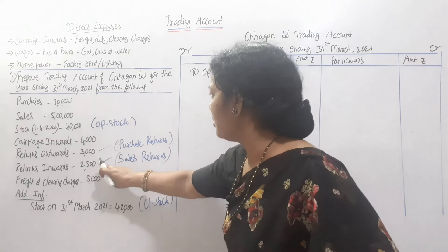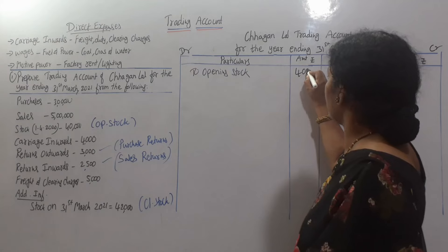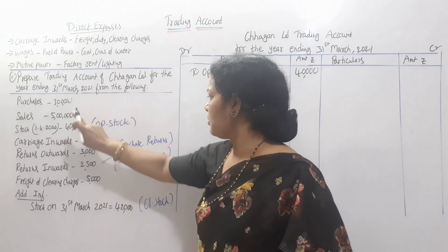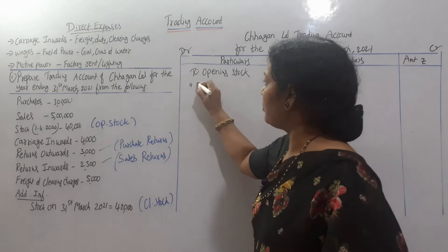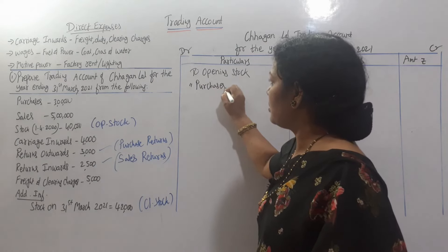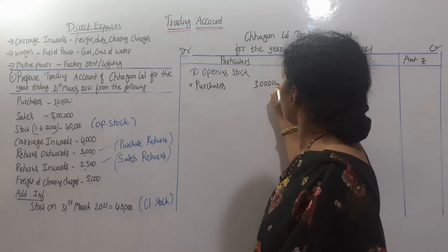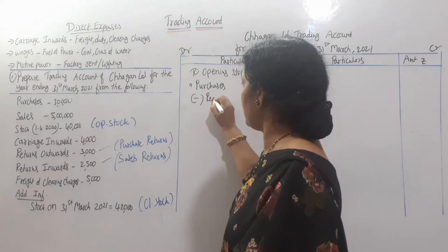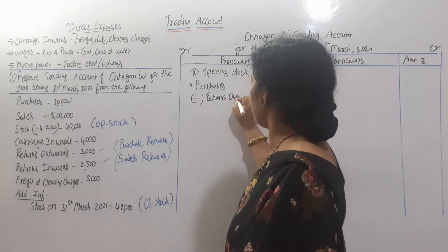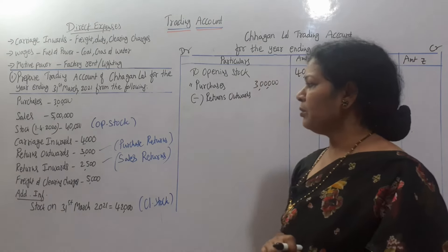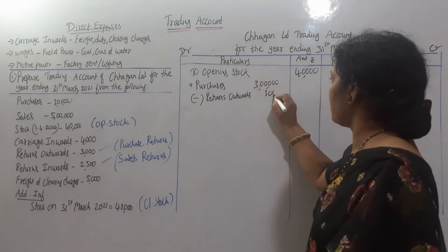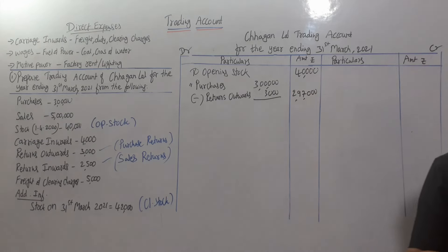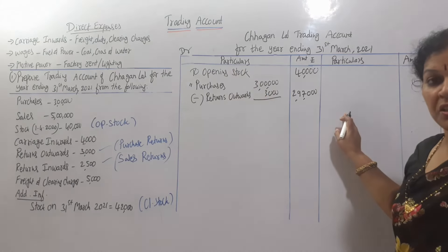Next, where is the purchase? Here it is. We also have purchase returns. The purchase amount is 3 lakh, minus purchase returns — return outwards — of 3,000. That gives us 2 lakh 97 thousand (₹2,97,000) as the net purchases figure on the debit side.